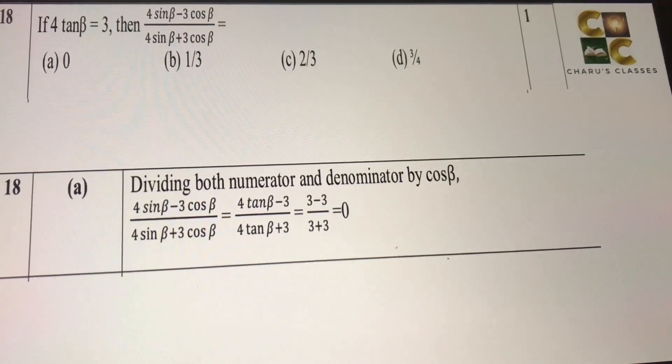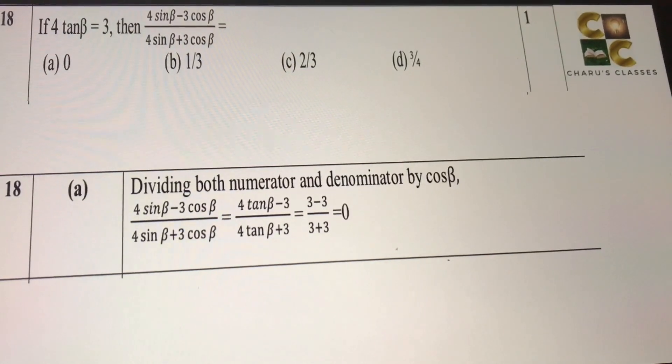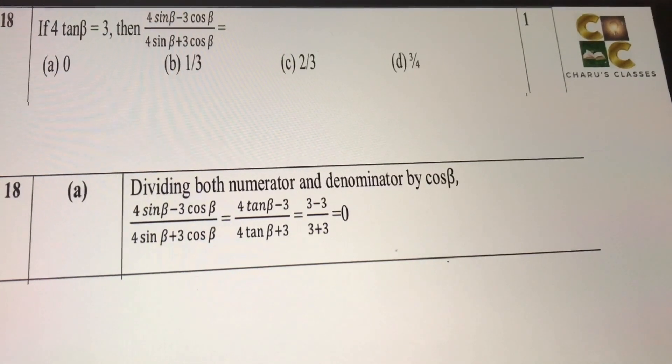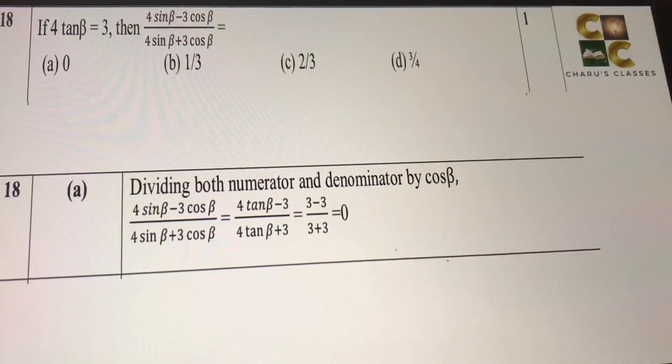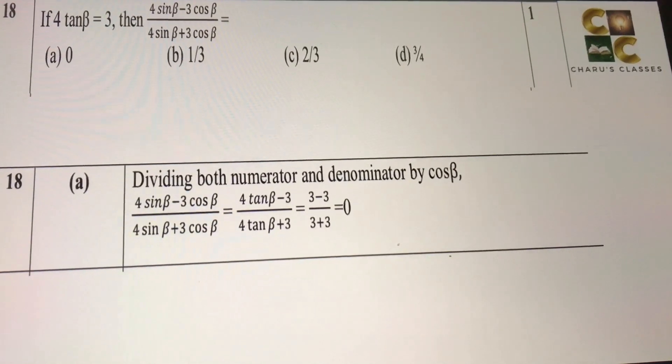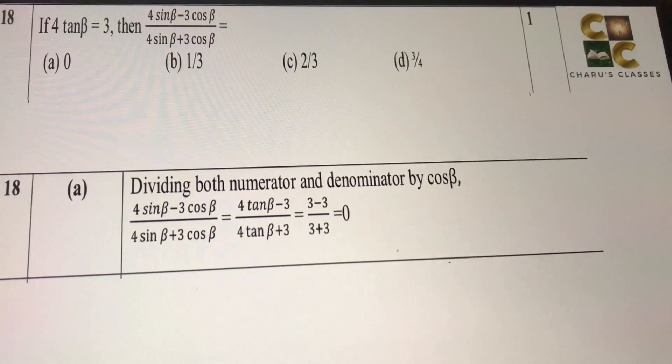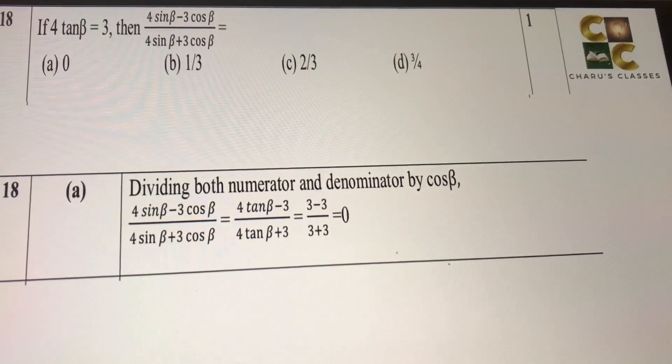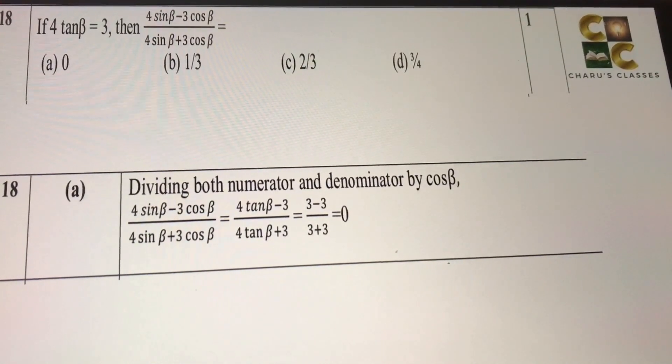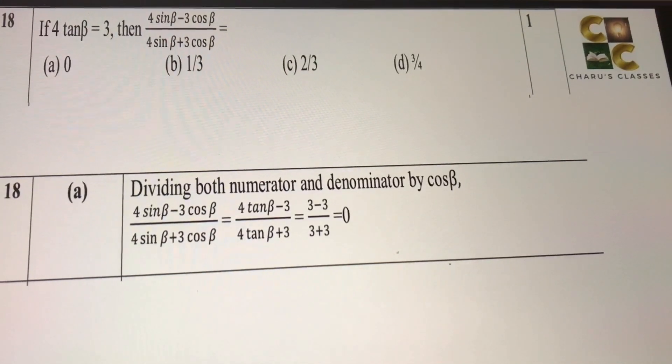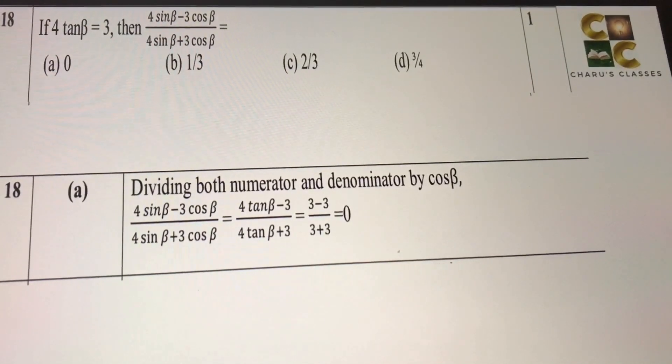Question number 18: If 4 tan beta is 3, then find the value of this thing. So we have the value of tan beta given. But it is having sin beta and cos beta. So dividing both numerator and denominator by cos beta, 4 sin beta by cos beta, this will give us 4 tan beta, minus 3 cos beta by cos beta, it will become minus 3, by 4 tan beta plus 3.